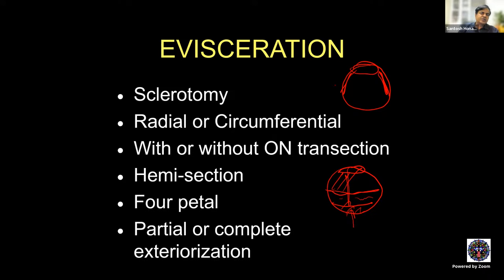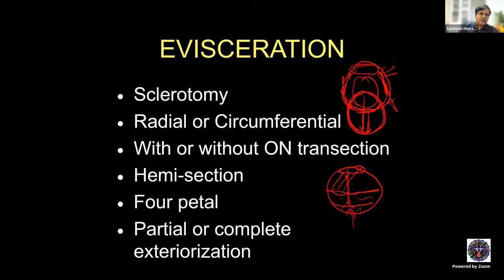If the optic nerve is removed and a posterior vent created, the implant can completely prolapse into the intraconal space — like doing an enucleation but without disturbing the extraocular muscles, providing double-layered scleral support. This is psychologically acceptable to patients who do not want the complete eye removed, and implant motility will be slightly better. Hemisection and four-petal technique are variants of this approach.